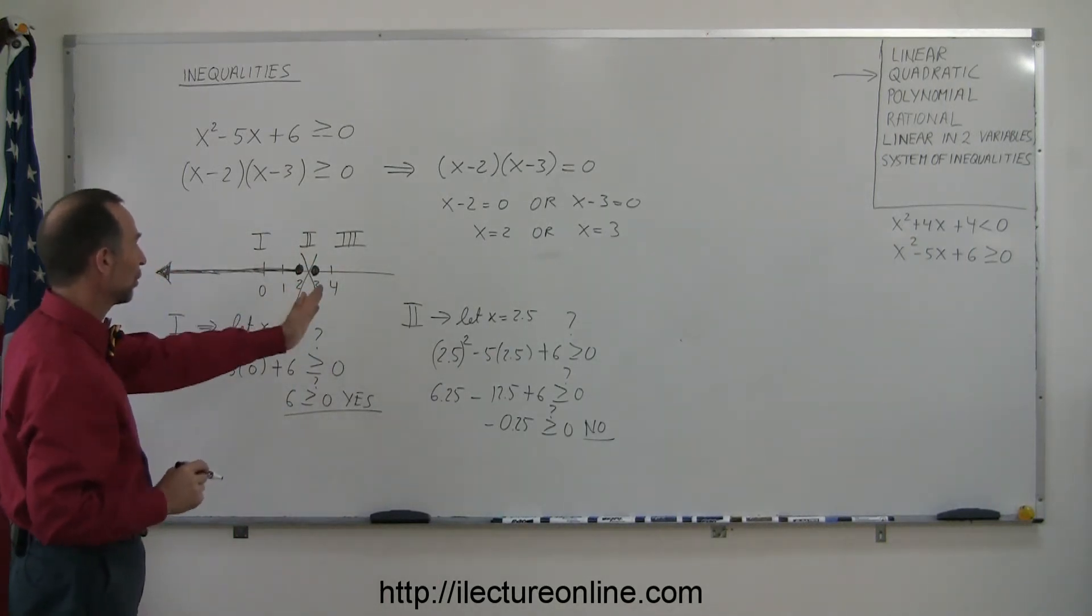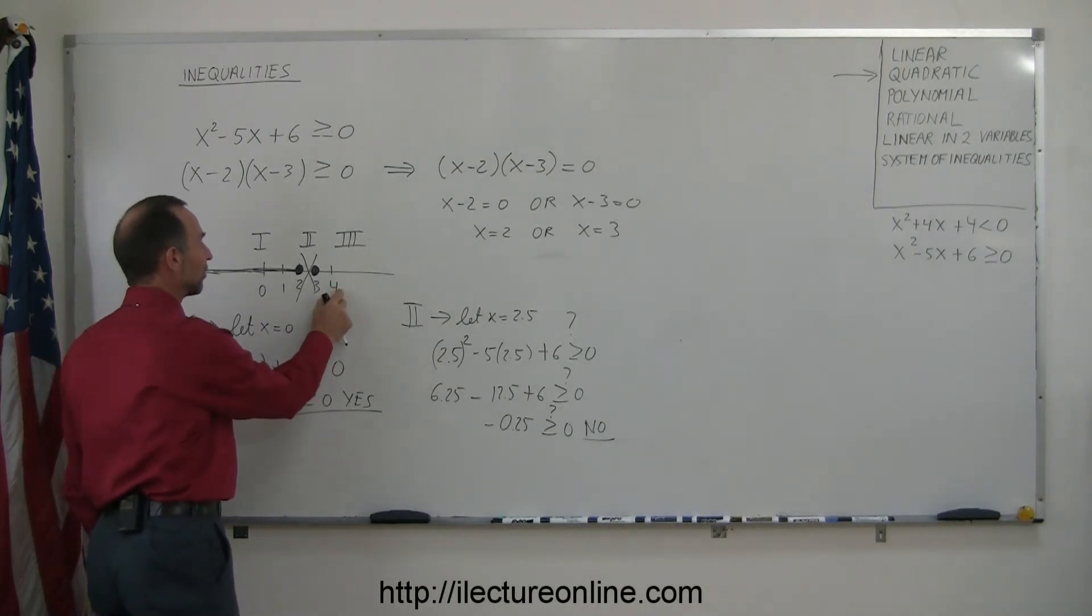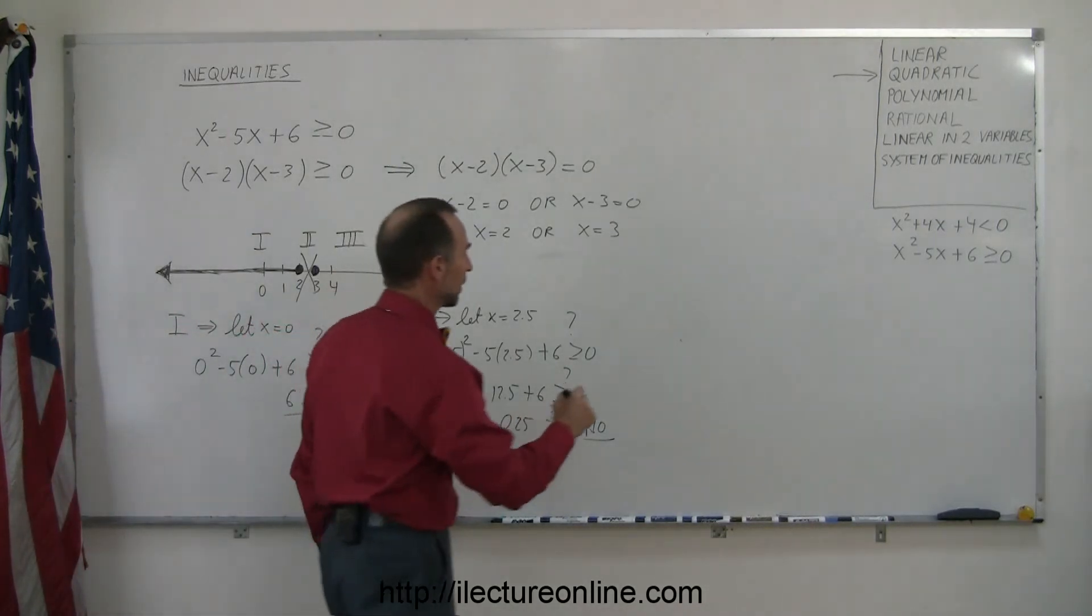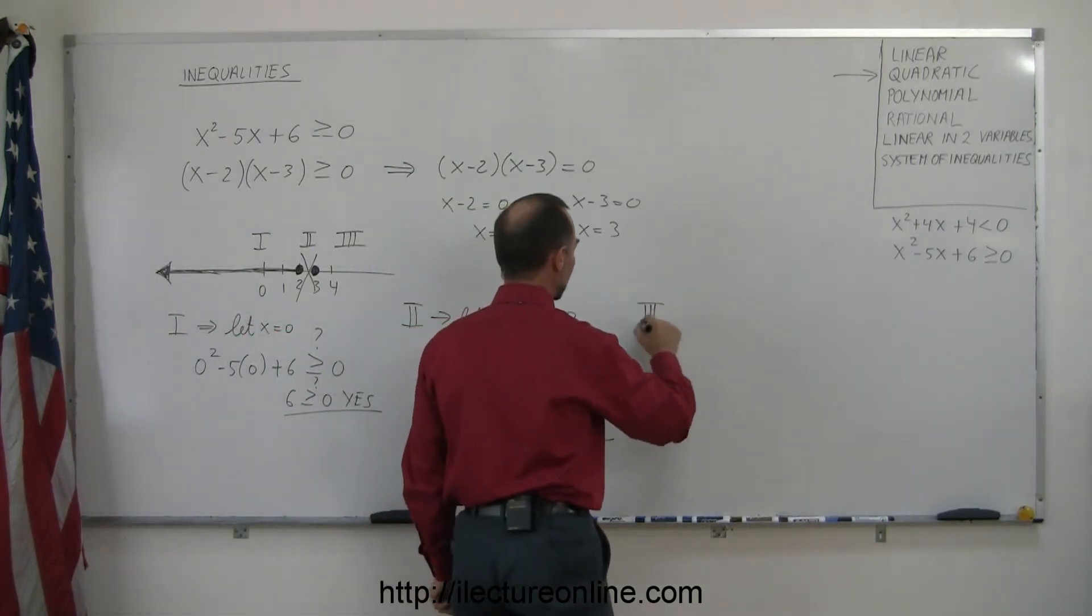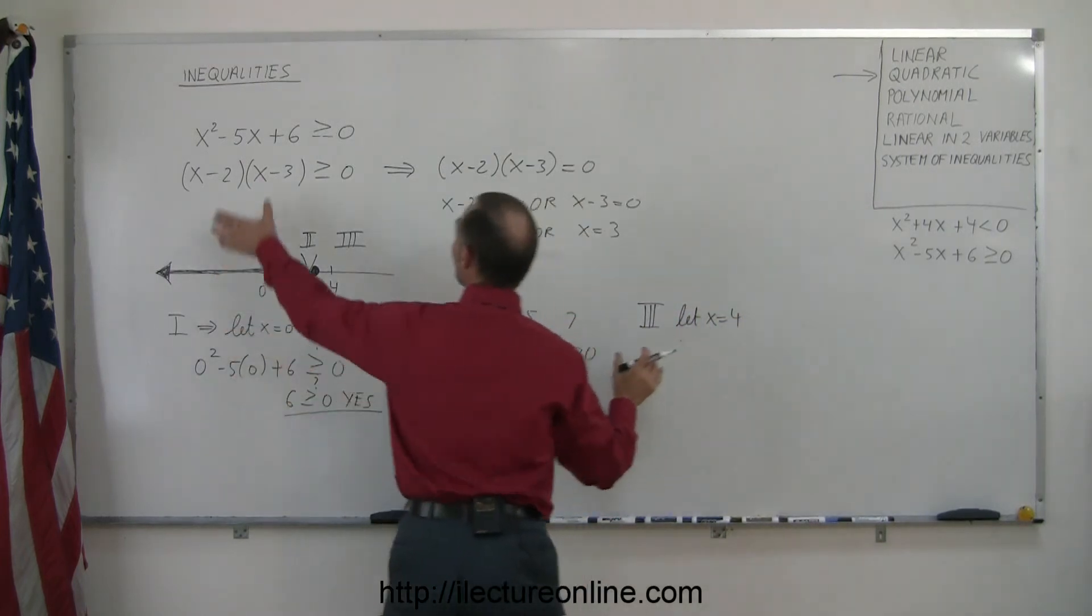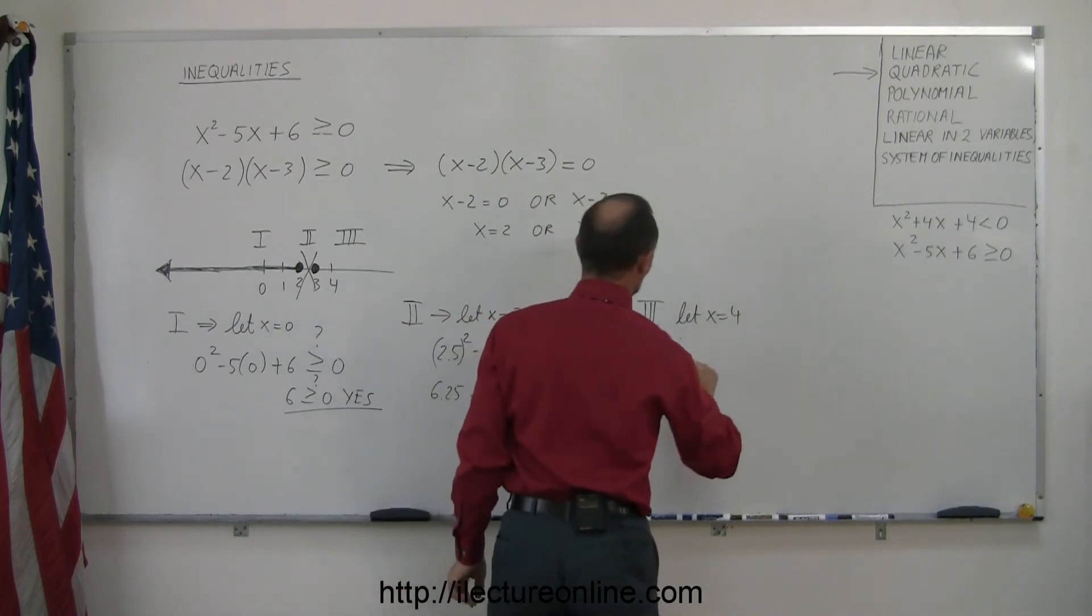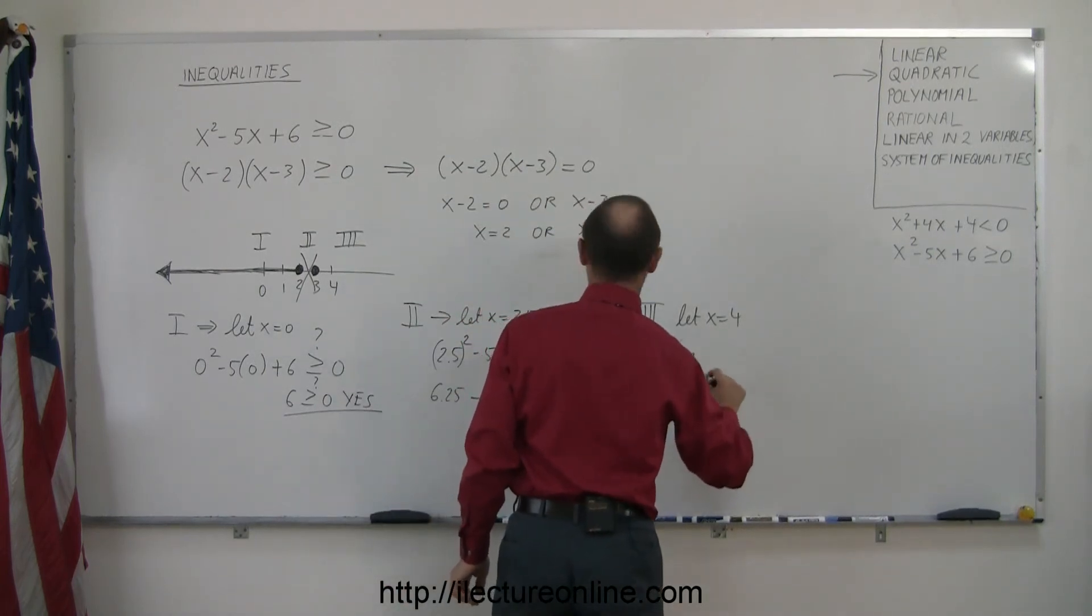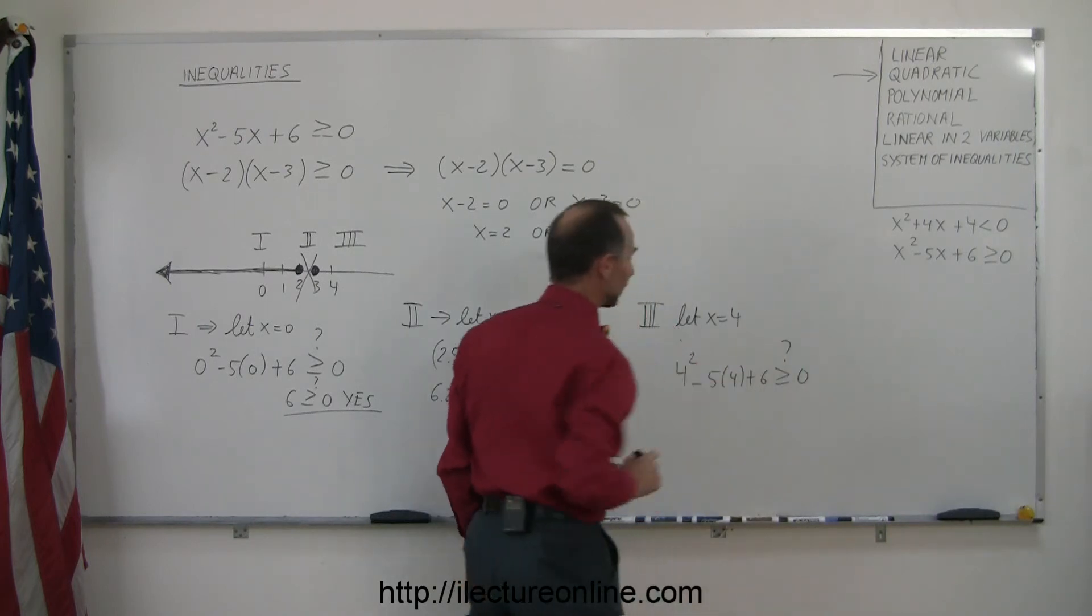Now we have one more region to test. So let's pick the number 4 as a test point for region 3. So now we're testing region 3. We're going to let x equal 4. Let's plug in 4 into our inequality. So we have 4² - 5(4) + 6. And is that greater than or equal to 0? Question mark.